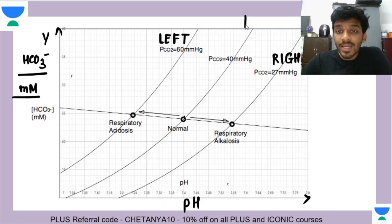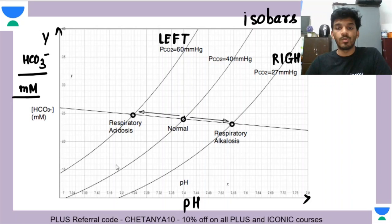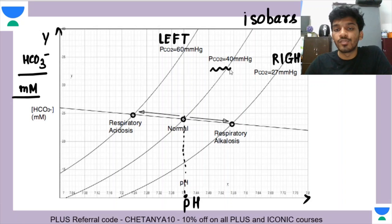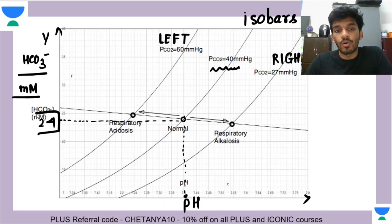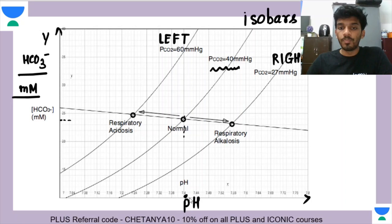A very important concept to pick from here is isobars. If the normal body pH is 7.4 and the normal concentration of CO2 is 40 mmHg, then what should be the bicarbonate concentration? It should be somewhere around 24 millimolars. So through that you have plotted a basic diagram. Now you know that if you know any two of the three values, you can find out the third.